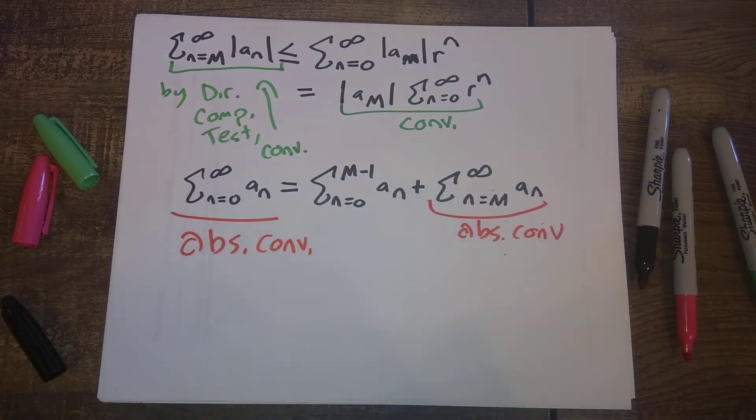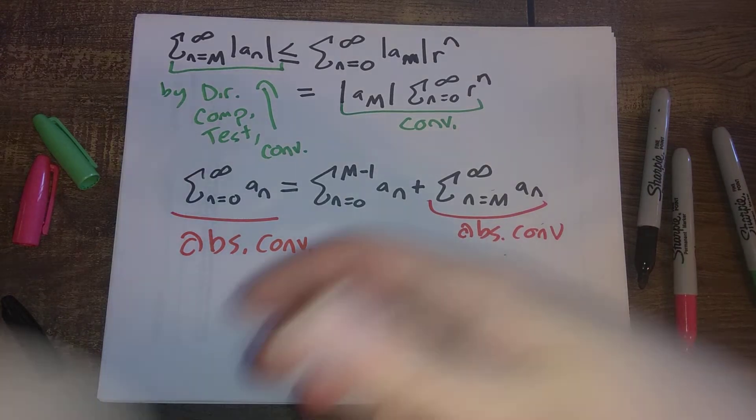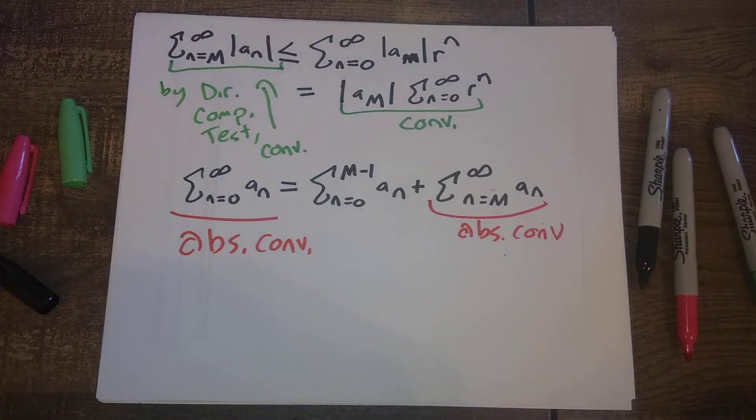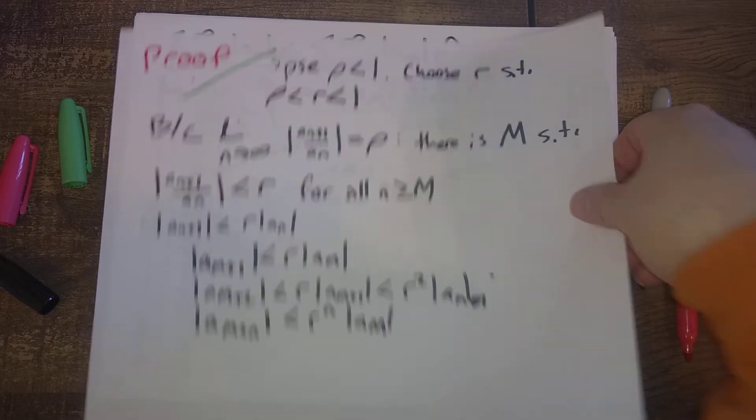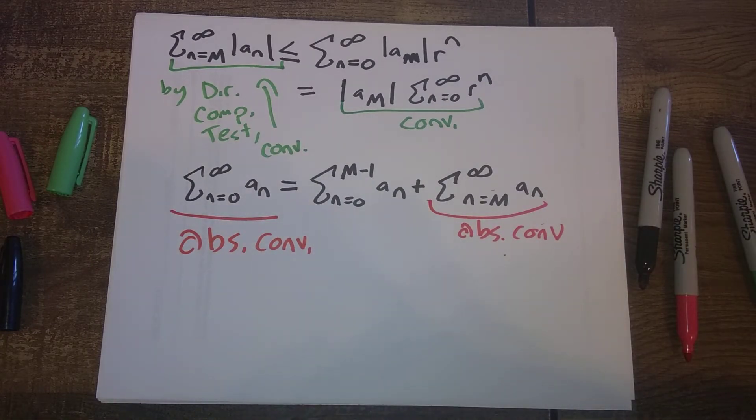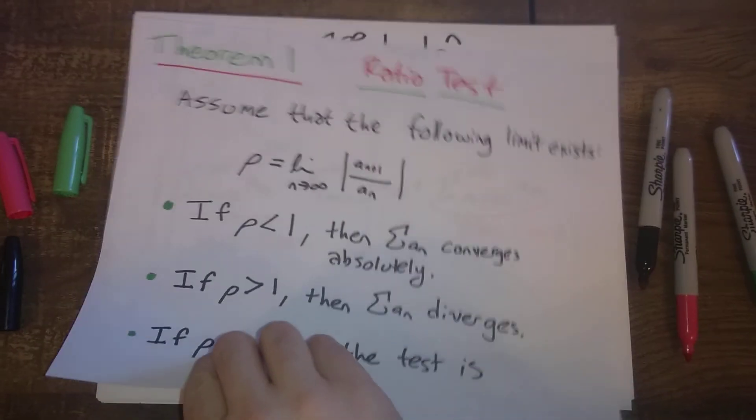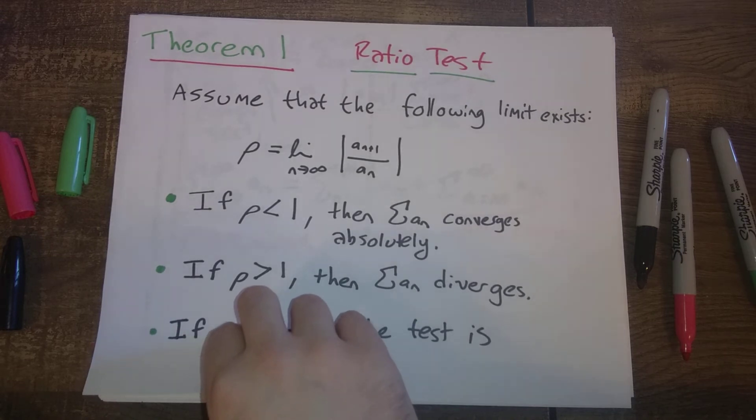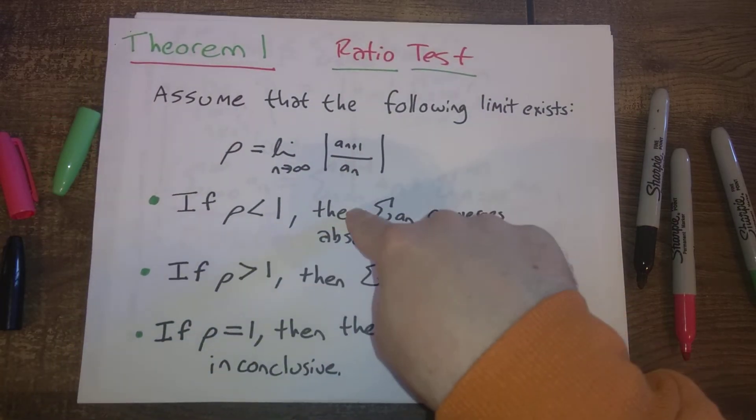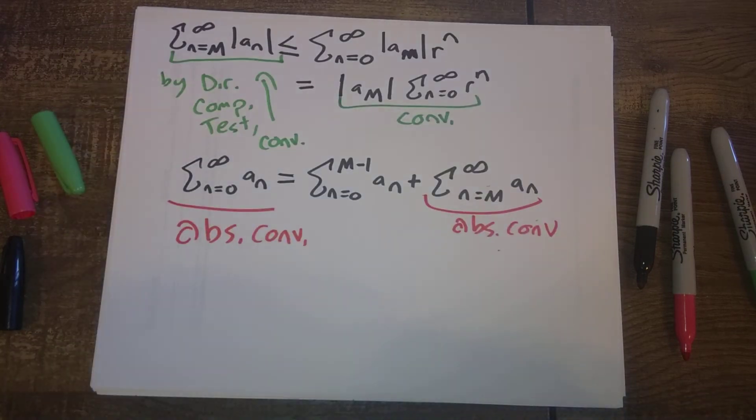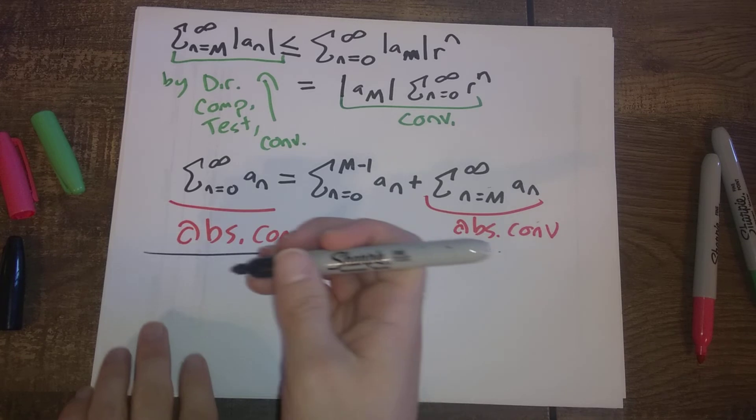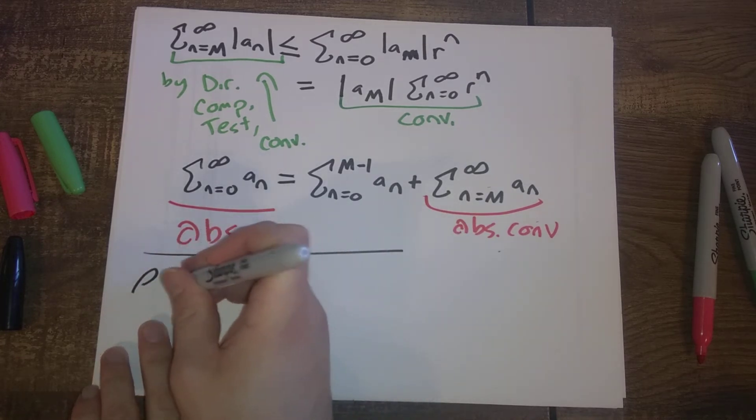So that takes care of one case here. This shows us that if ρ is less than 1, this work, followed by this work, comparing this to a geometric series and then using the direct comparison test, and concluding that our series absolutely converges, that's how we take care of the first case here in the ratio test. So we've taken care of this case, and the last thing for us to think about is what happens if ρ is strictly bigger than 1.